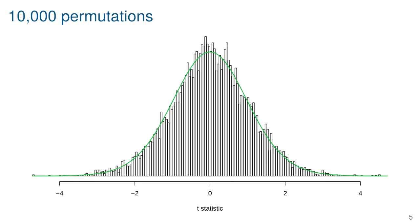If we calculate the p-value corresponding to 2.8 — the area to the right of 2.8 and the area to the left of negative 2.8 — whether we're using the theoretical t distribution (the green curve) or the histogram from the empirical permutation distribution, we get pretty much the same answer.